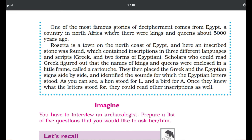One of the most famous stories of decipherment comes from Egypt, a country in north Africa where there were kings and queens about 5000 years ago. Rosetta is a town on the north coast of Egypt where an inscribed stone was found containing inscriptions in three different languages and scripts — including Greek and two forms of Egyptian. Scholars who could read Greek figured out that the names of kings and queens were enclosed in a little frame called a cartouche.